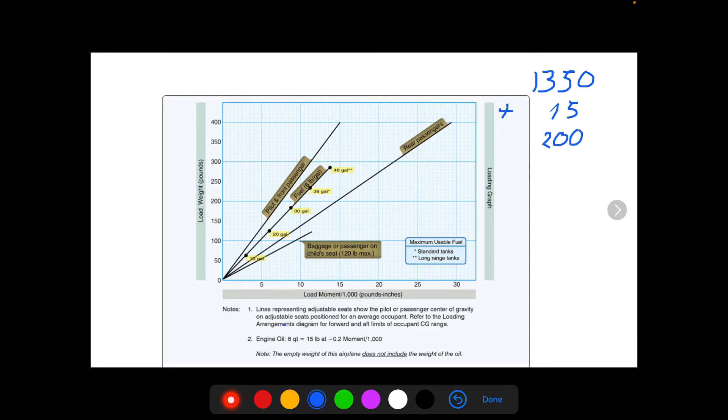So let's say another weight is 200 for the pilot in front passenger, so the pilot is 200 pounds in the front seat, and we want to find the moment for the pilot. So we're going to use this line, this is the pilot in front passenger line.